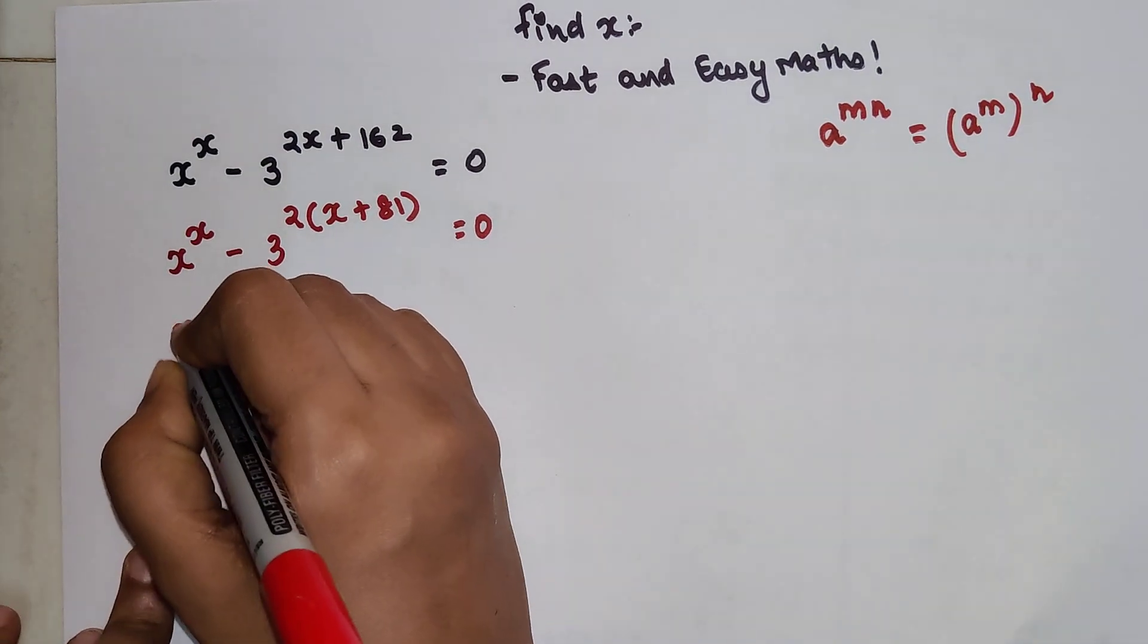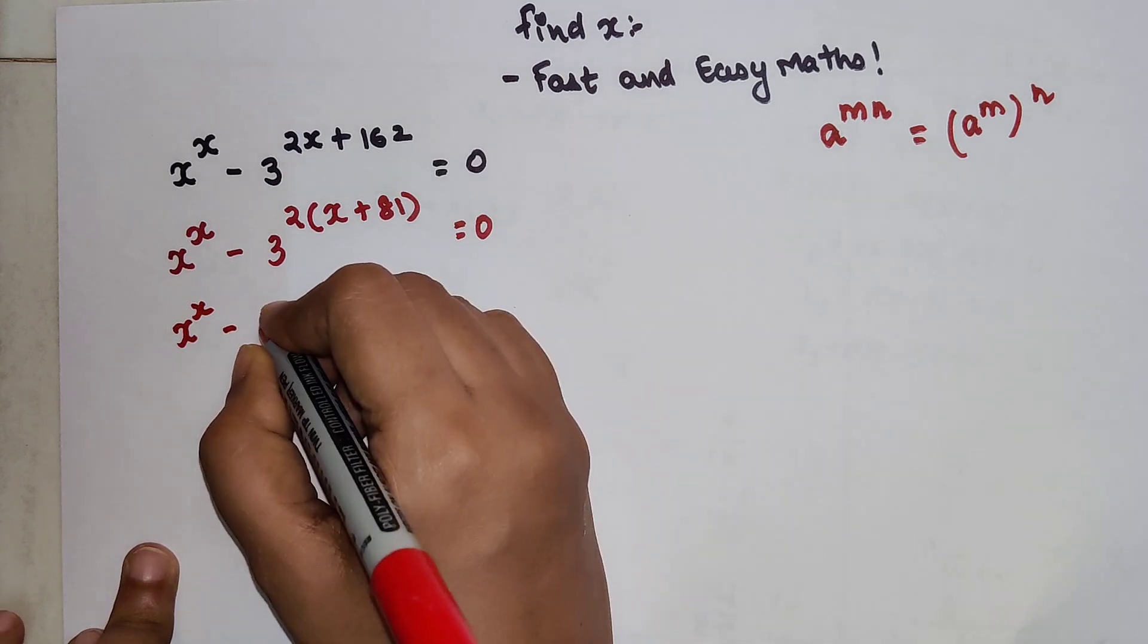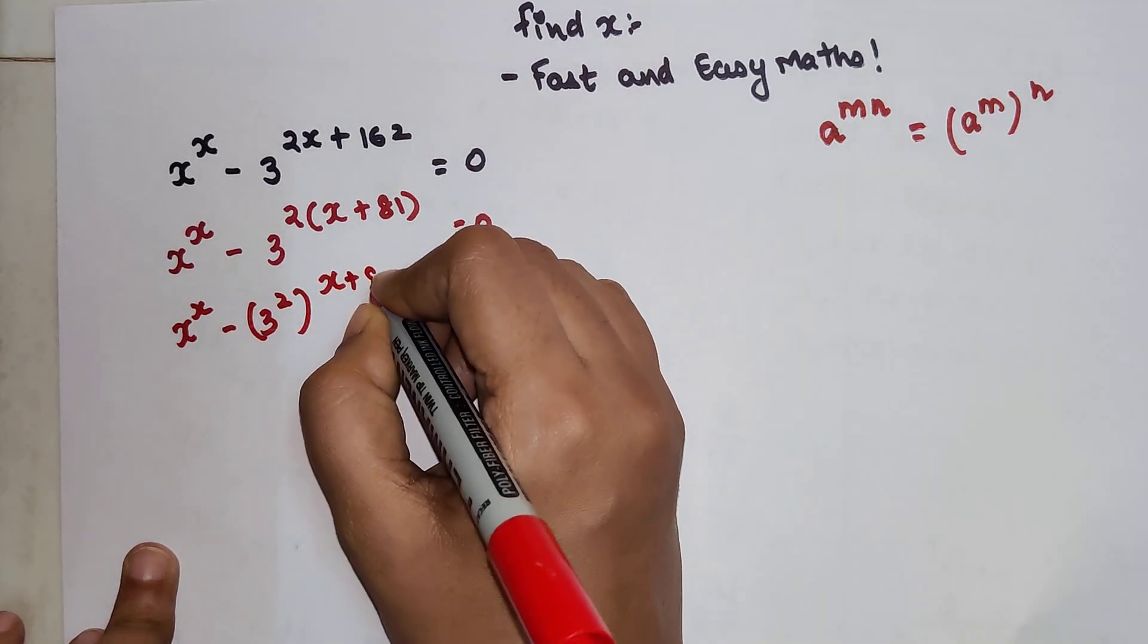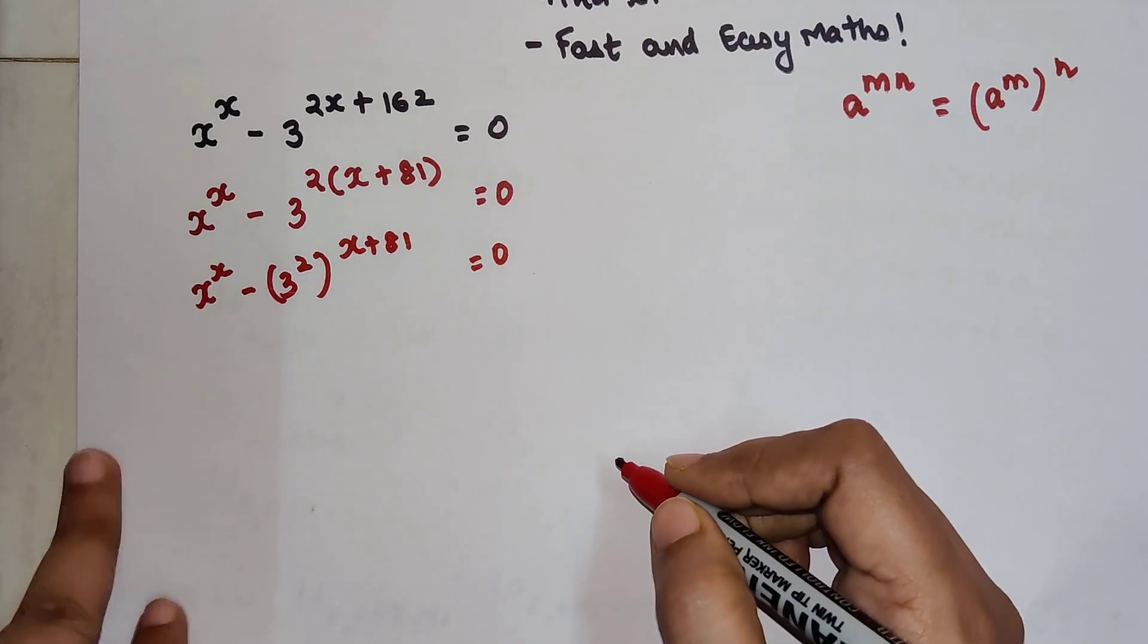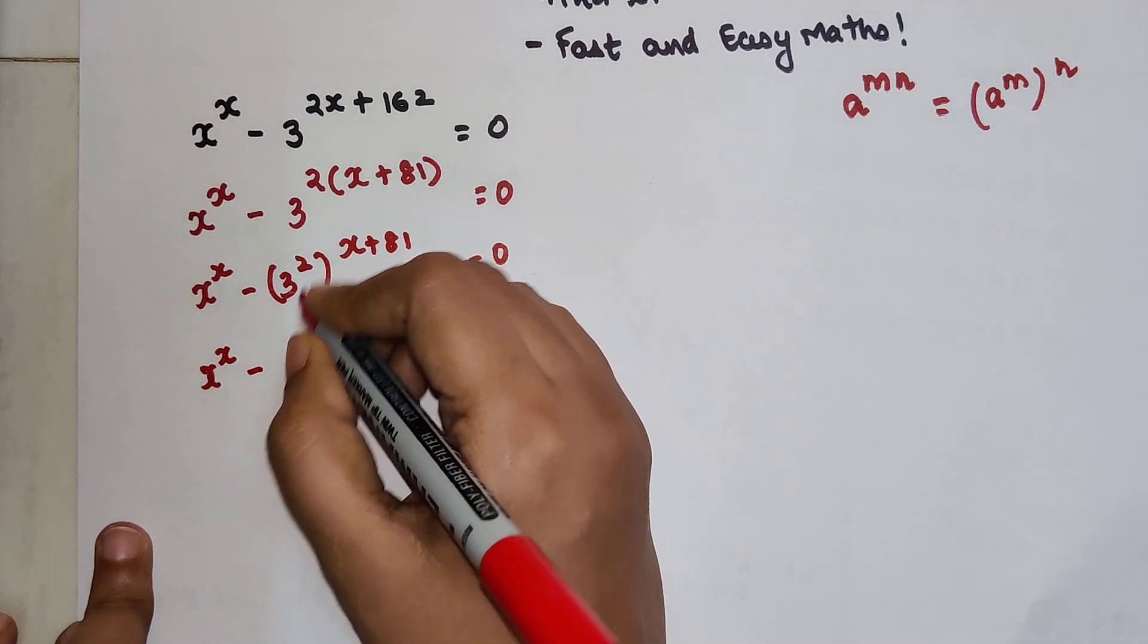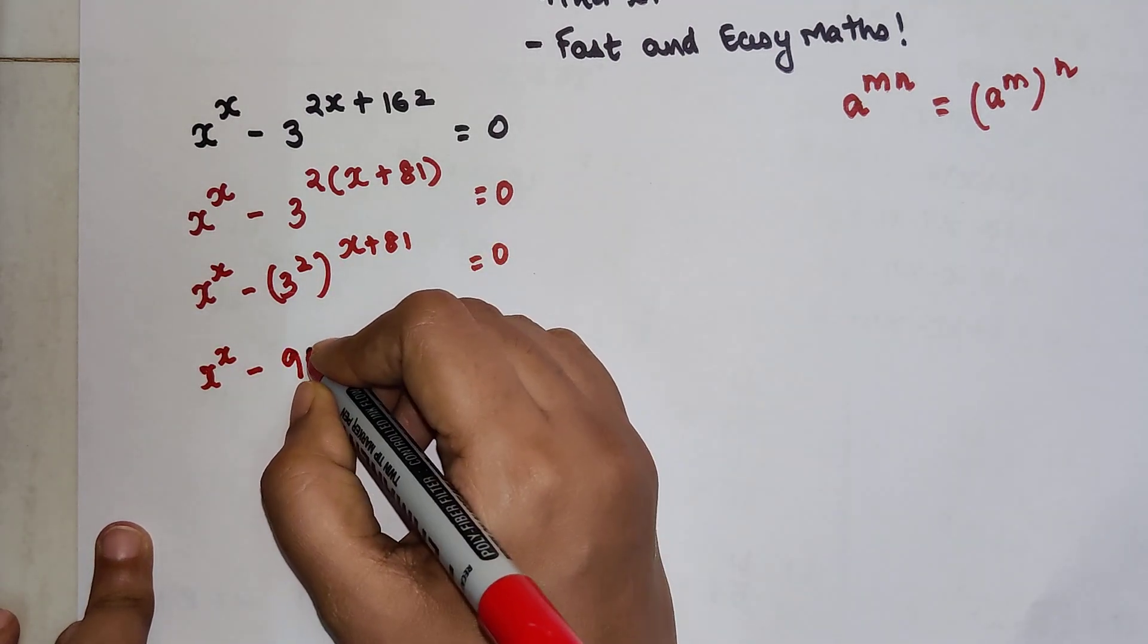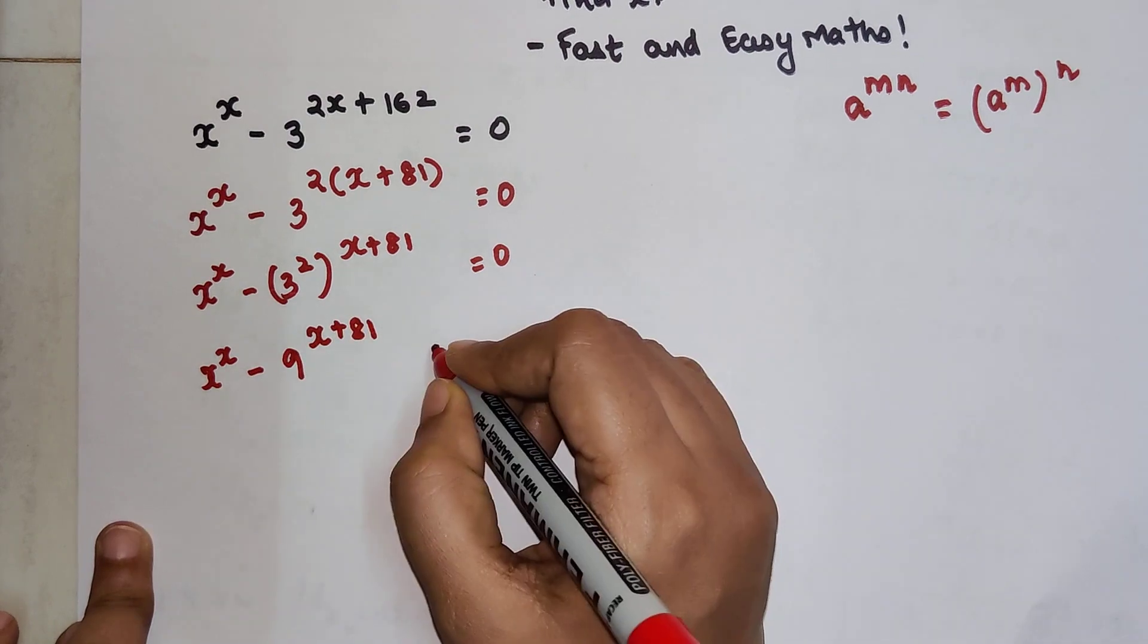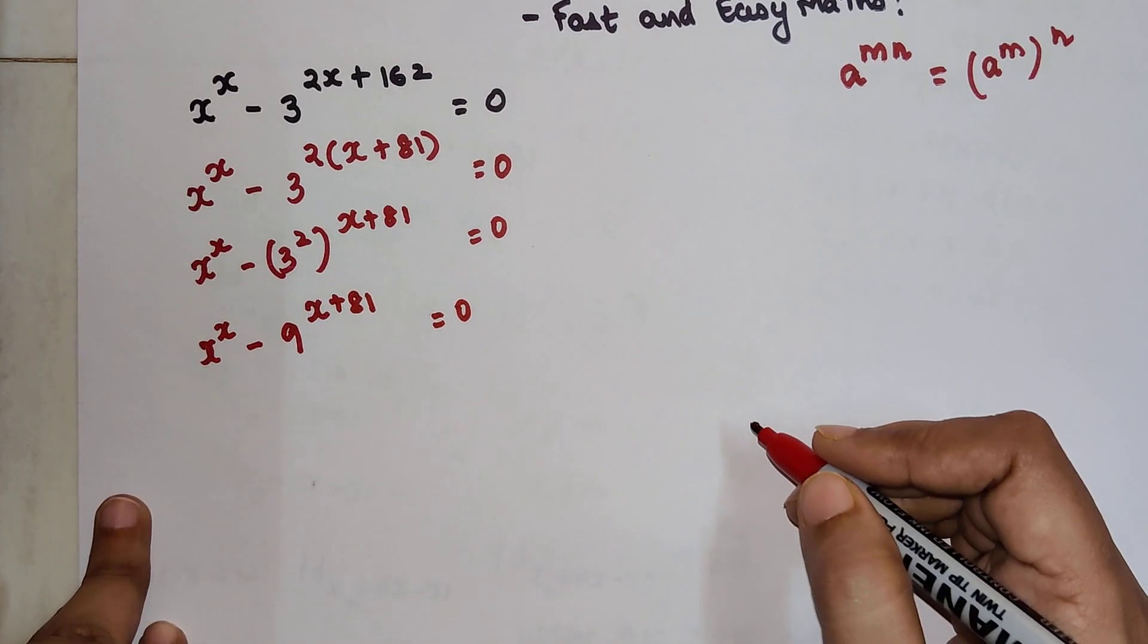So basically, here also I can write this as 3 square, the whole raised to x plus 81 equals 0. So now we have x raised to x minus 9 raised to x plus 81 equals 0.